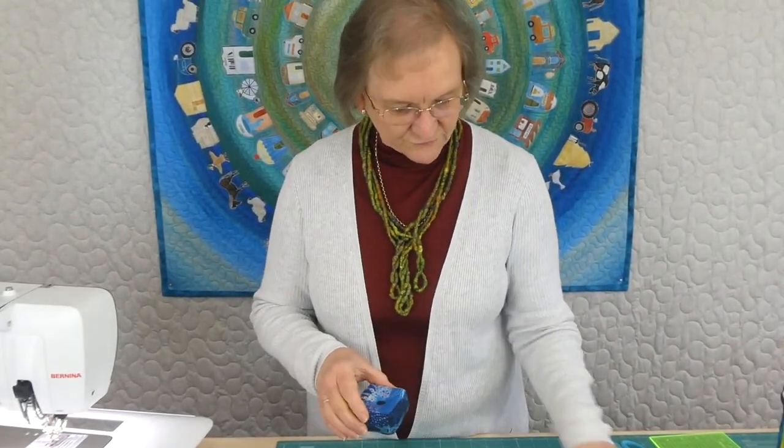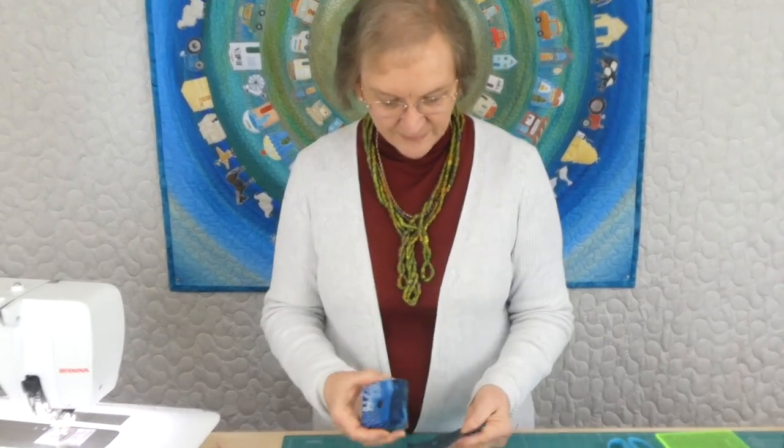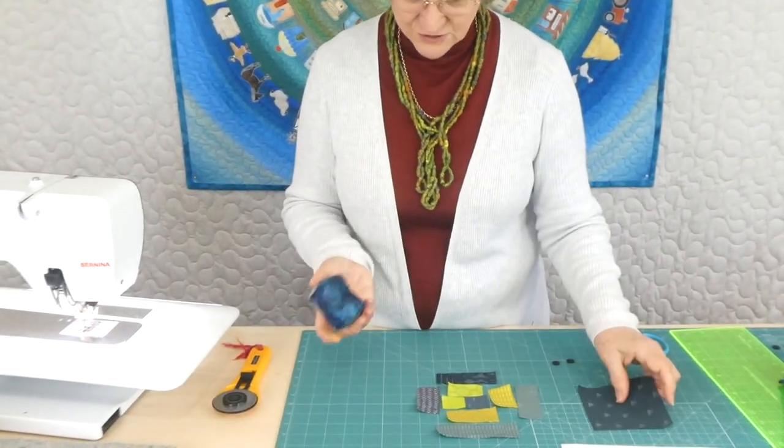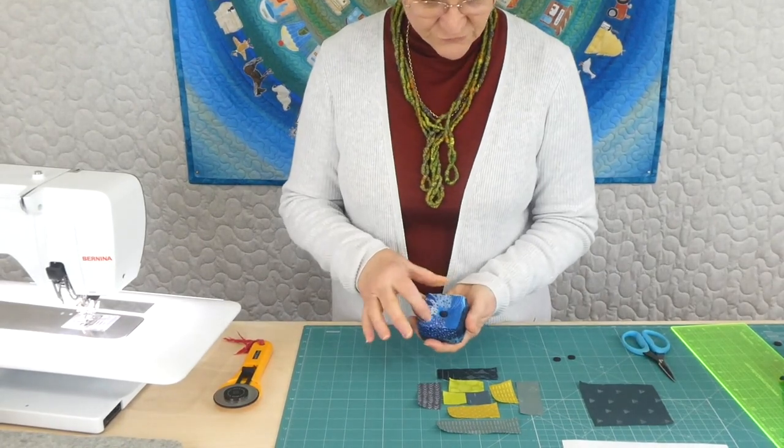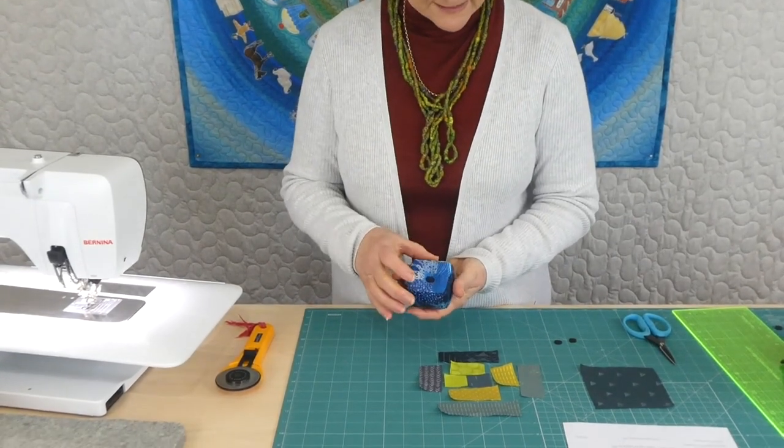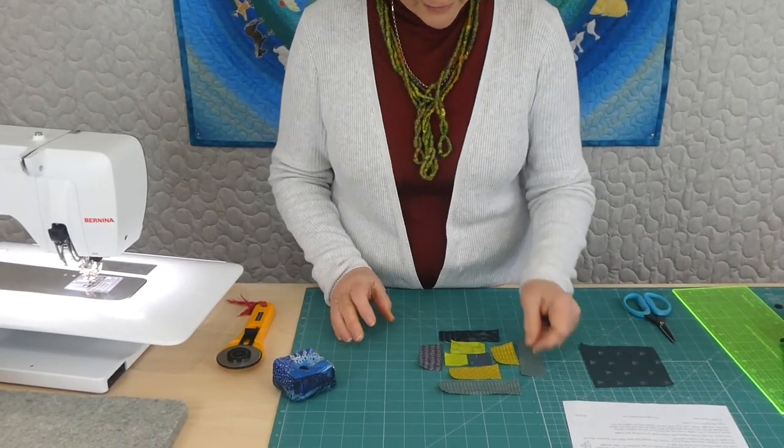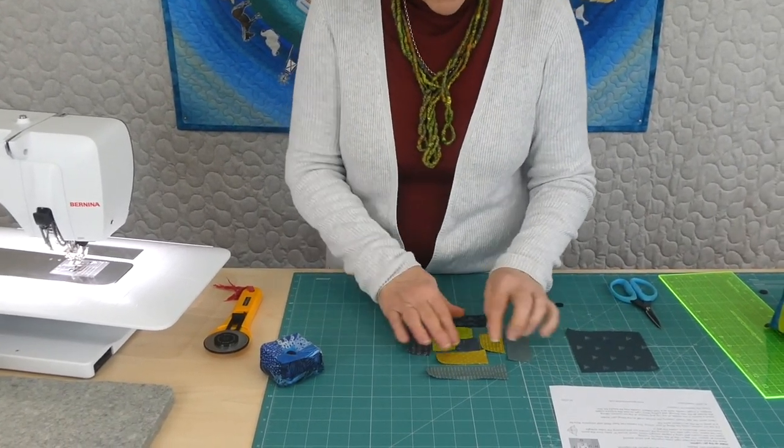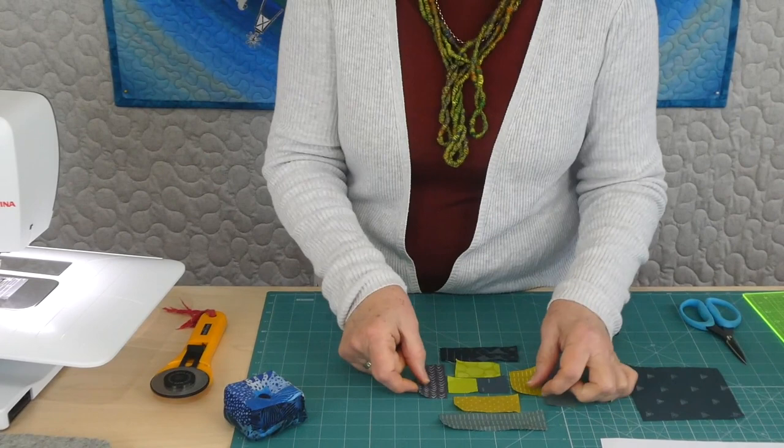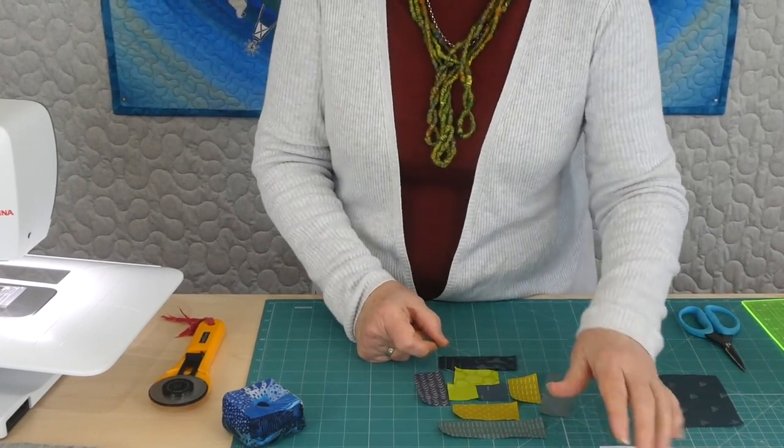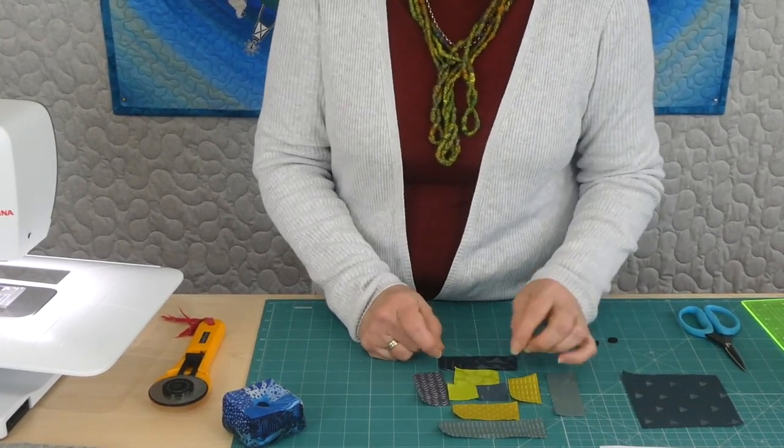So basically what we've got is a front and a back. So I've cut out all my pieces. This is my back, just a square. And the front is really just a traditional log cabin style block. So if you're familiar with that you'll know how that goes. We start in the center. So I've laid everything out the way we're going to do it. In the pattern everything is labeled and numbered so that you know what's what.